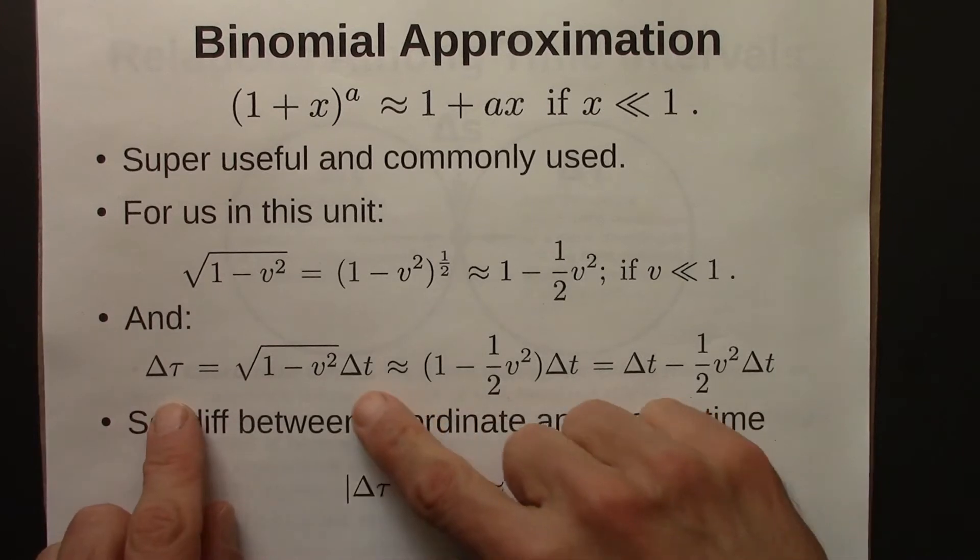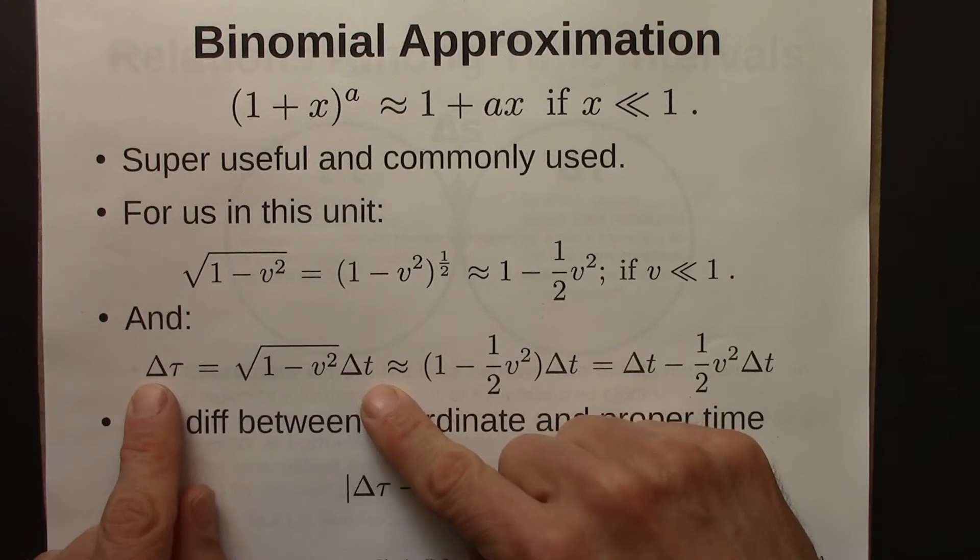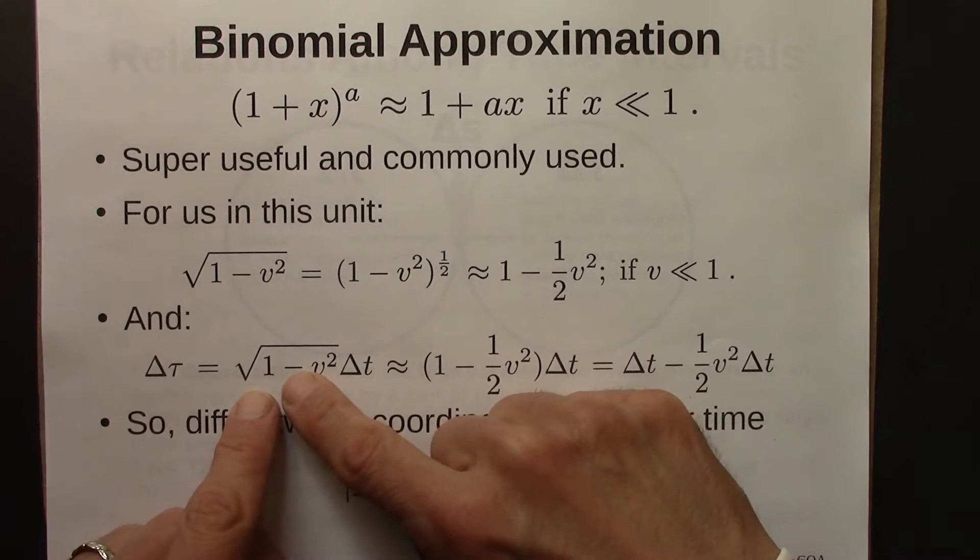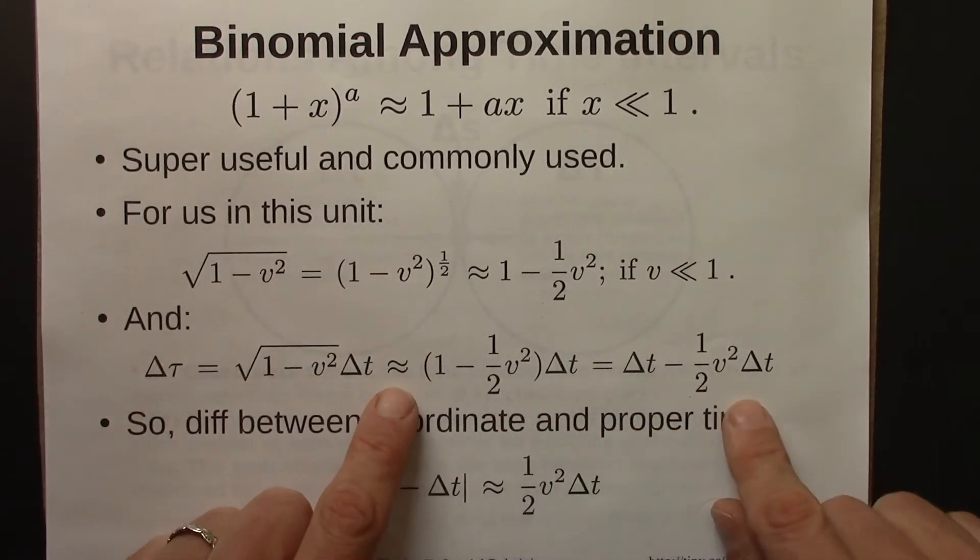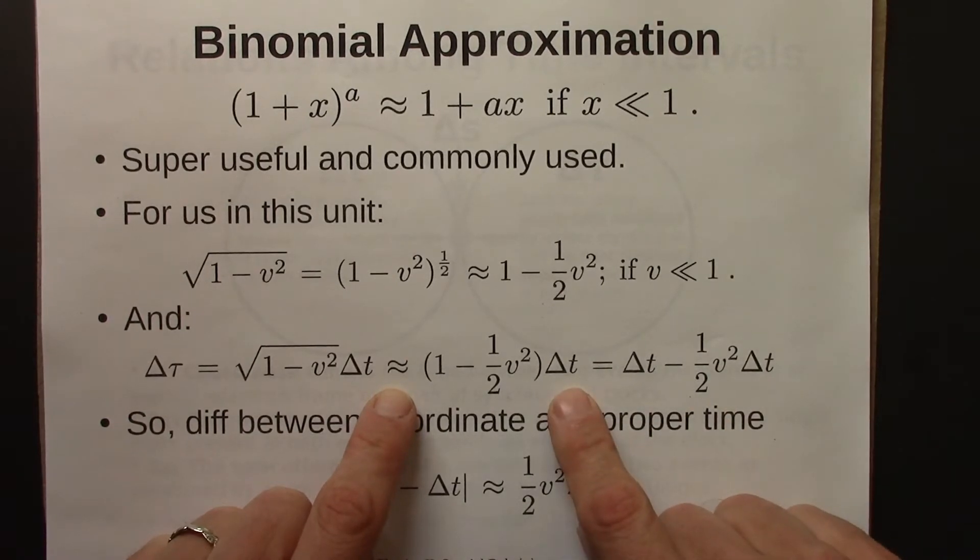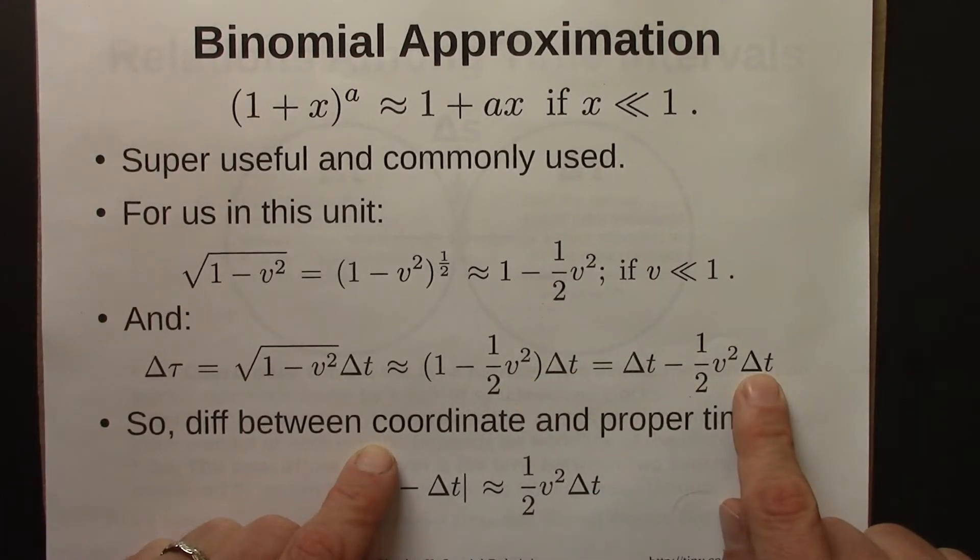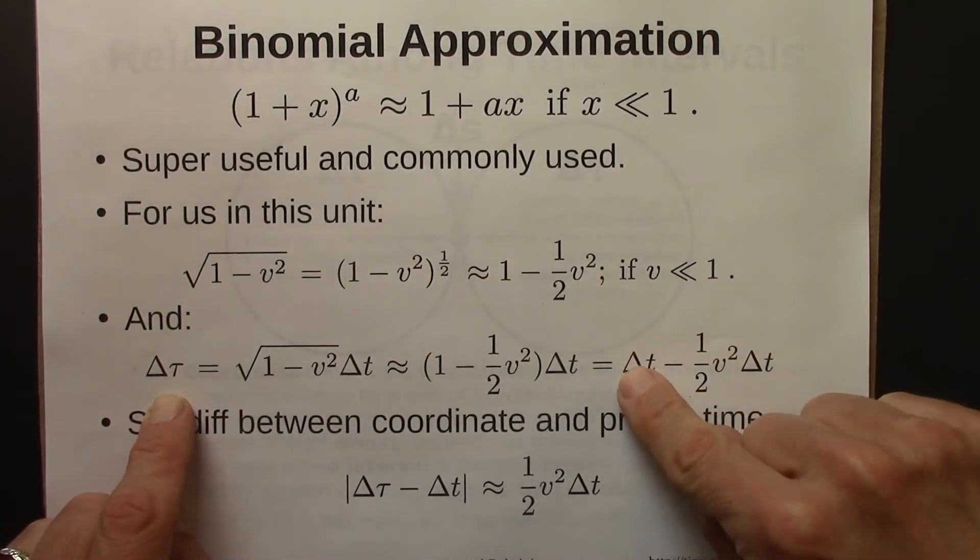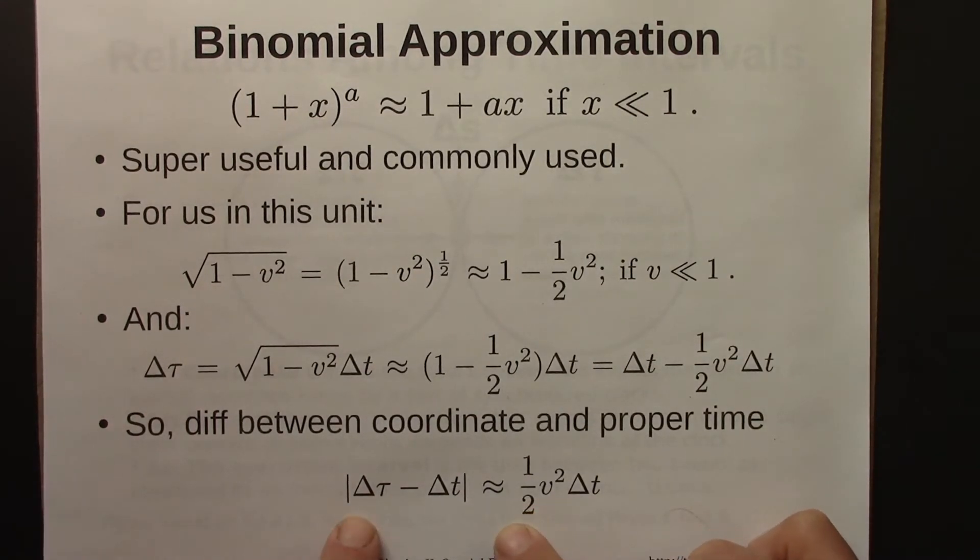So then, going back to the proper time formula, we can do a little bit of algebra and get a really useful expression. So here is that square root thing. Here I'm replacing it with its binomial approximation. And then I go from here to here, I distribute the delta t. Delta t times 1 is delta t. Delta t times minus blah is minus blah times delta t. And then the last thing I do is I subtract delta t from both sides. Just move this over here. And I get this. And I took absolute value just to make the difference positive.